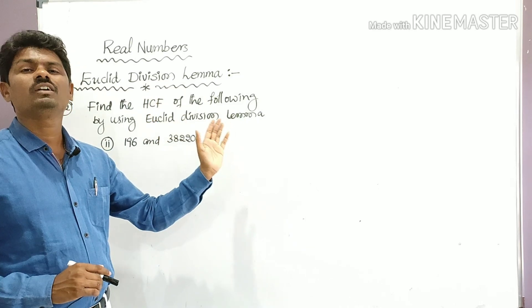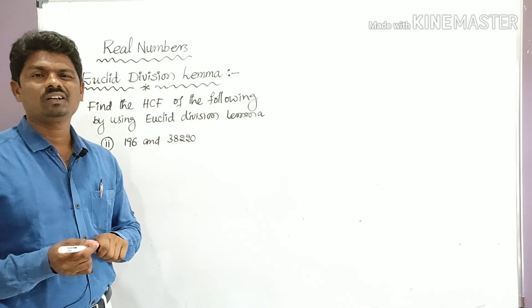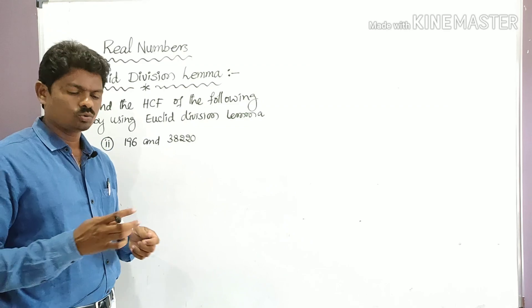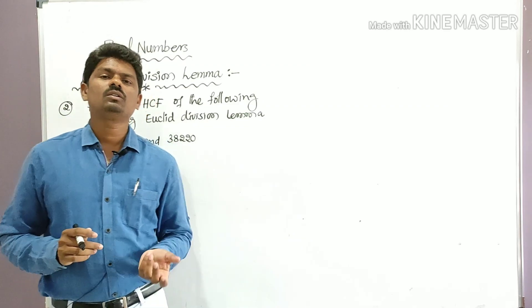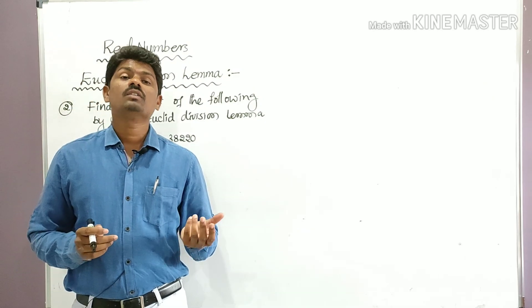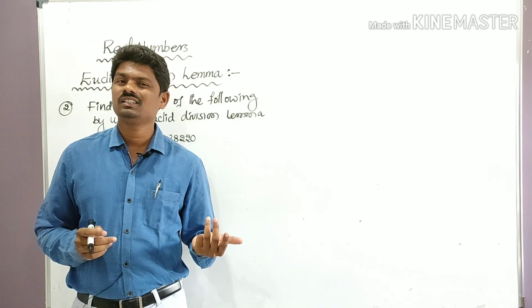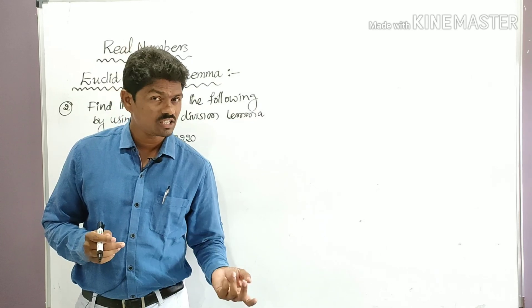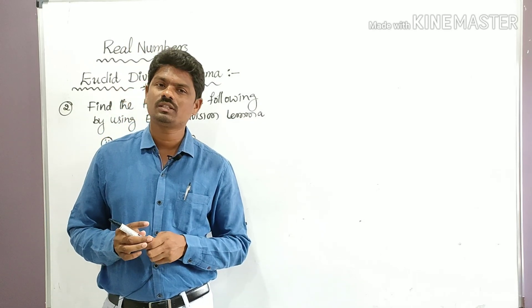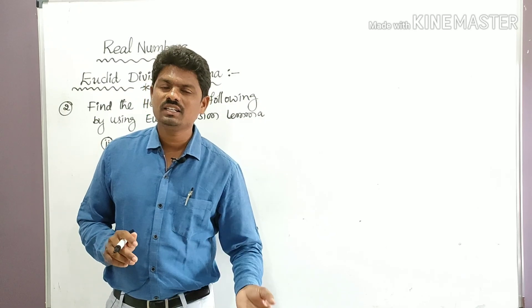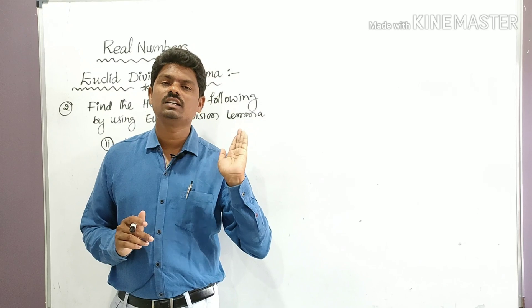This is a very important two-mark question. The given numbers are 196 and 38,220. Recall: Euclid Division Lemma states that if a and b are any two positive integers, then there exist unique integers q and r such that a = b·q + r, where the condition is 0 ≤ r < b.